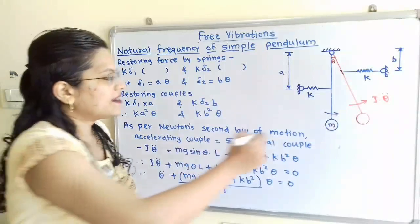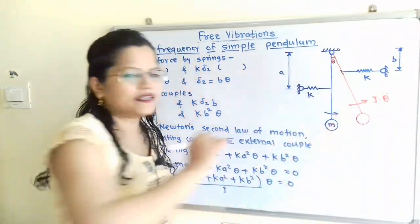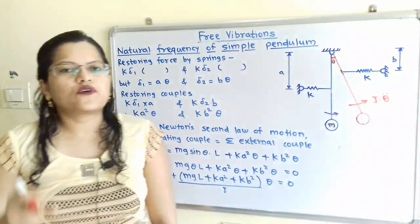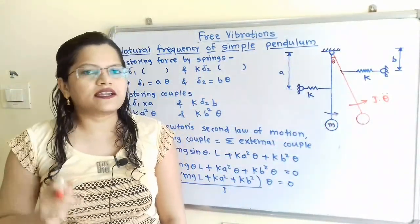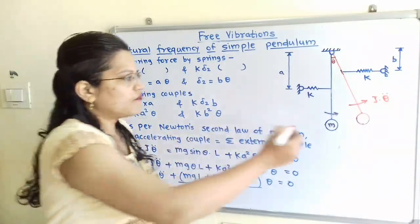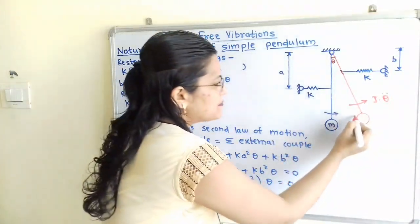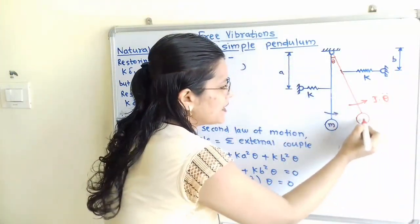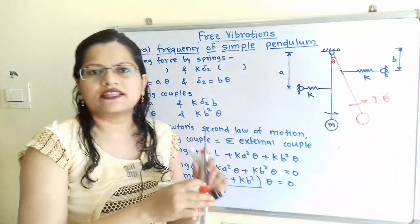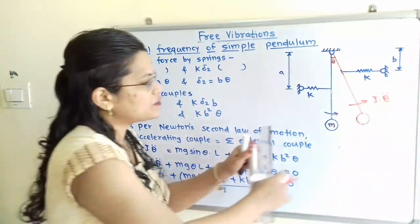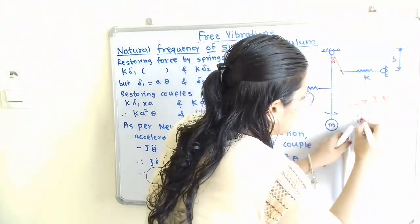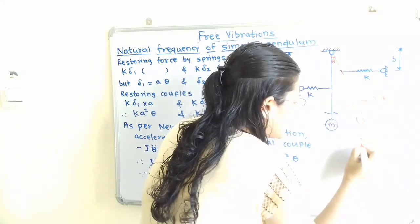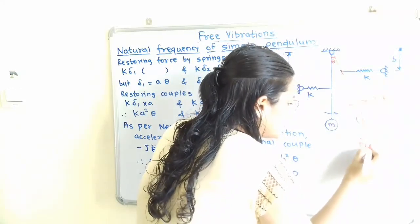We know that here the bob is having mass M, so weight will act in the vertically downward direction. For this displaced mass M, we have to show the weight passing through the center and acting in the vertically downward direction, and that is equal to Mg.